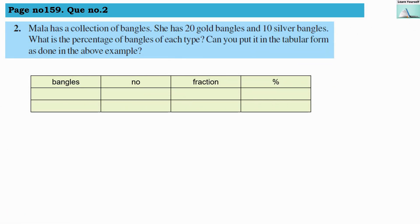Page number 159, question number two: Mala has a collection of bangles. She has 20 gold bangles and 10 silver bangles. We need to find the percentage of bangles of each type and put it in tabular form as done in the above example. Gold bangles: 20, silver bangles: 10, total: 20 + 10 = 30 bangles.